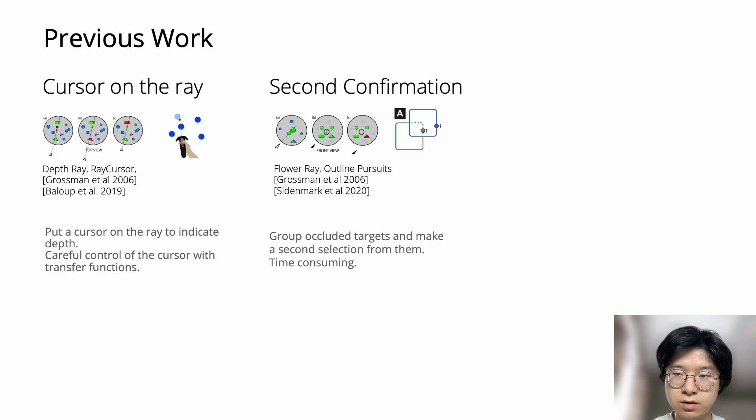Some techniques provide an explicit second confirmation step. For example, Flower Ray would spread the occluded targets which allows users to reselect. Outline Pursues checks user's eye movement and puts a moving dot on the outline of the target. Target will be selected when the eye movement matches the dot trace. They can be precise, but it is also time-consuming.